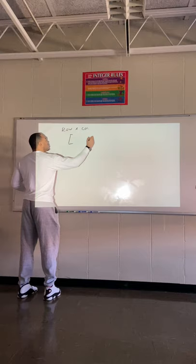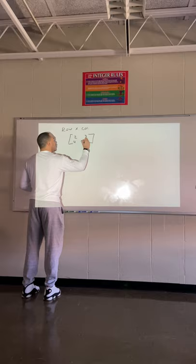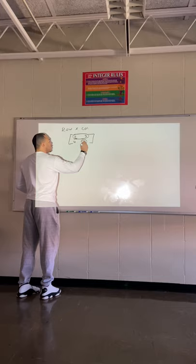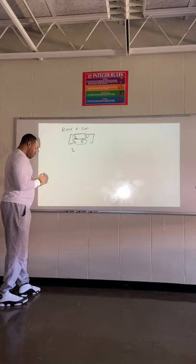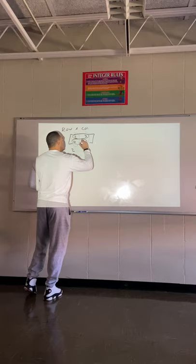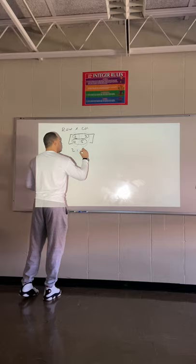So if I had a matrix — let's say 2, 3, 4, 5 — we need to figure out what's a row and what's a column. In a matrix, these are considered rows. So in this example I have two rows. We also need to state the columns because we do row by column. These are columns, so I also have two columns. So this matrix is a two by two.